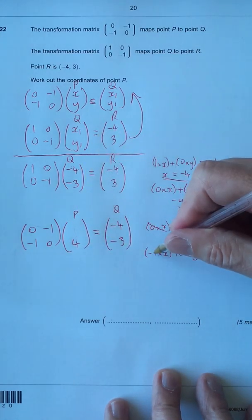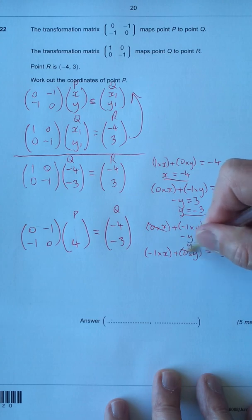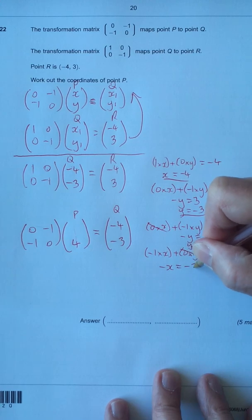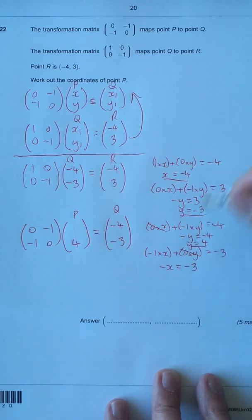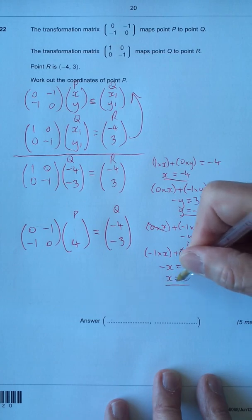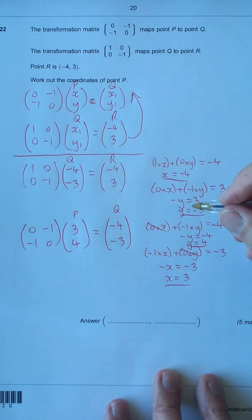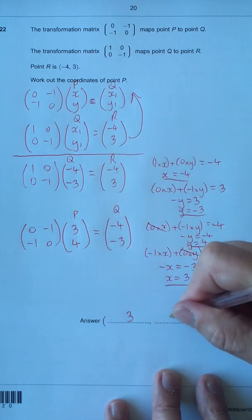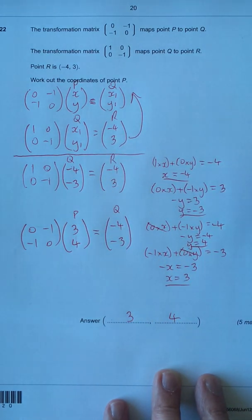Now, let's simplify the second part. Nothing times Y, that goes out. So I've got minus 1 times X, so it's just minus X equals minus 3. Divide through by minus 1, so we've got X equals 3. And let's substitute that in, 3. So now we have the coordinates of P, 3, 4. And that's it.